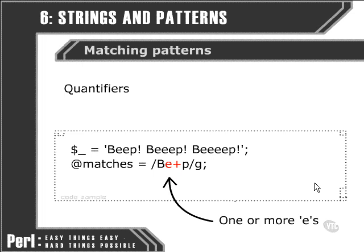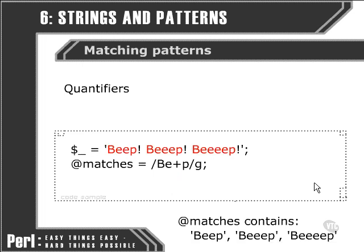So in this case, we're saying 'BEP' is valid, and then B followed by three E's followed by P is valid, and B followed by a thousand E's and then a P would also be a valid instance of this pattern. If we run this script, the matches array will have caught all of the instances of the pattern that are contained within the string.